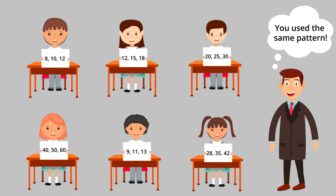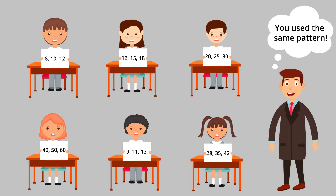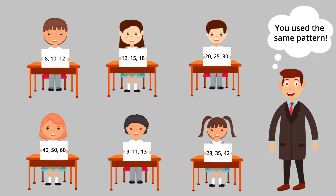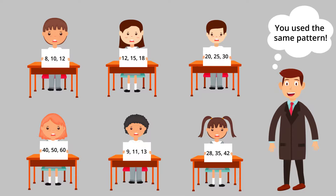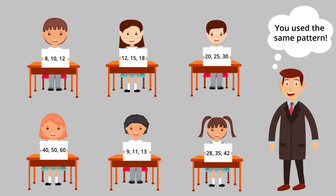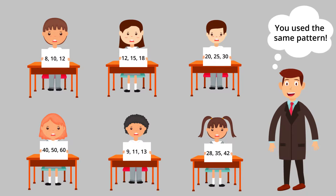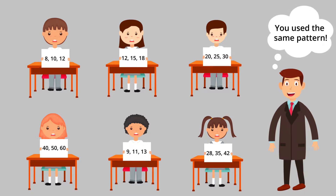Furthermore, they were unwilling to test examples of numbers that went against their initial hypothesis. Watson coined this as confirmation bias, since the participants tested their ideas in a one-sided way, focusing on one possibility and ignoring alternatives.